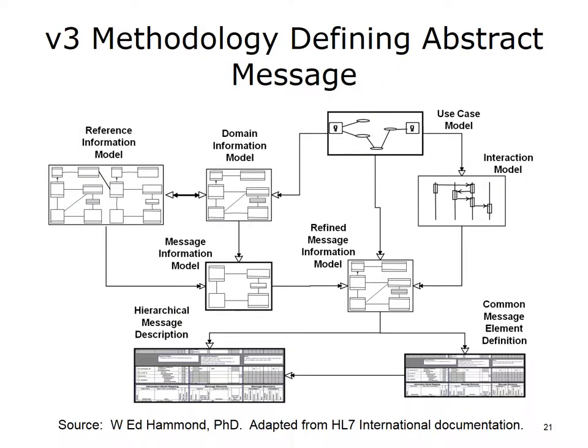Another view of the total process for creating an abstract message shows the links or relationships among the many processes. The use case model is used to create a domain information model (DIM) based on the generic RIM. From the DIM constrained by the RIM, a message information model (MIM) is created. From the use case, the interaction model is derived, and the use case, interaction model, and MIM together create the refined message information model (RMIM).